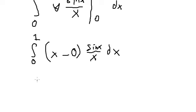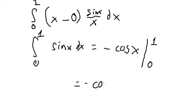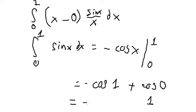We simplify s and s, and now we have the integral of sin(s). The integral of sin(s) is negative cosine s, with boundary from zero to one. So we get negative cosine of one plus cosine of zero. Cosine of zero equals one. This is the final answer. That is the end — thank you for watching.